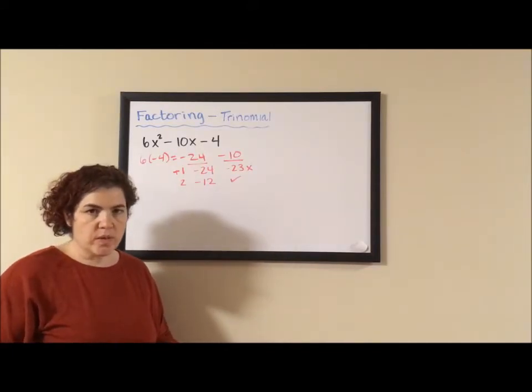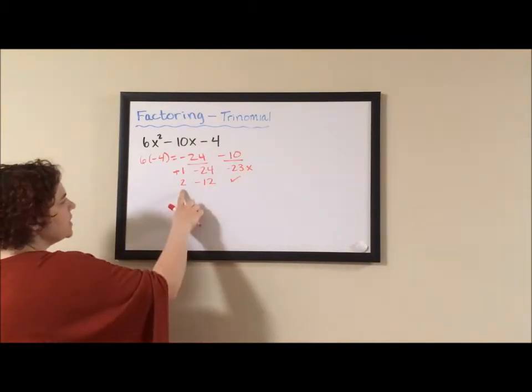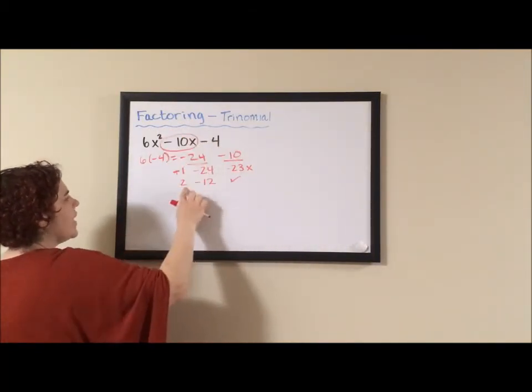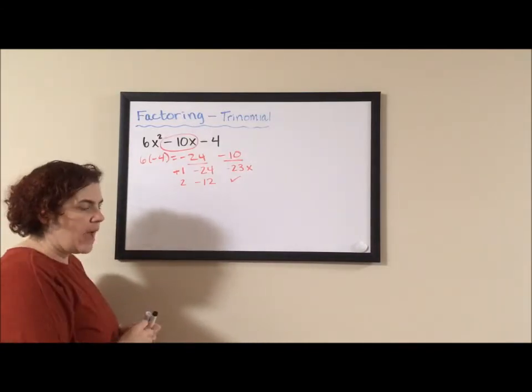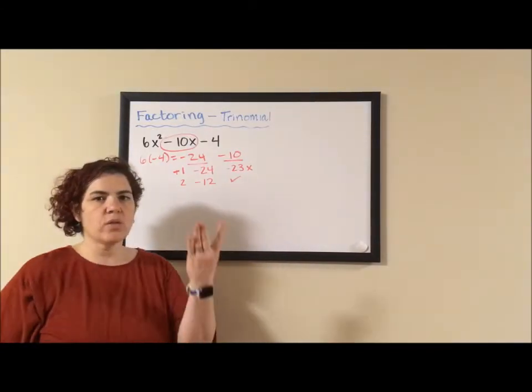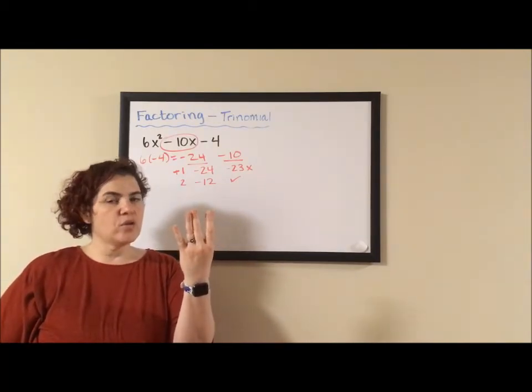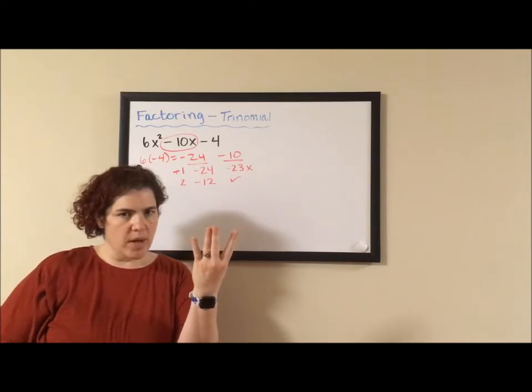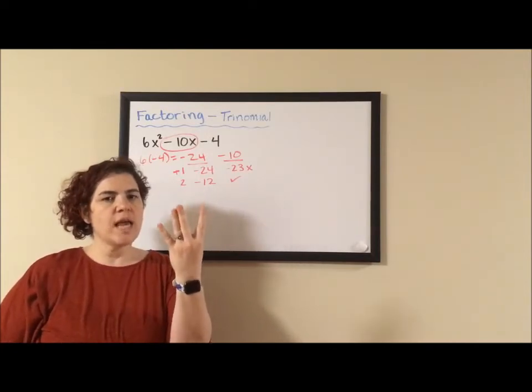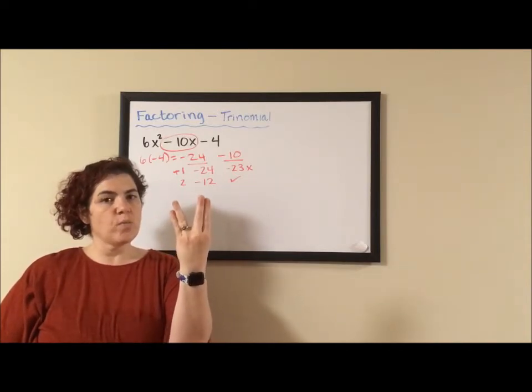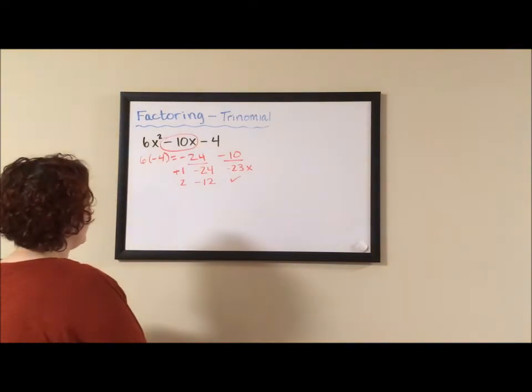And what we're doing when we do the AC process is we're replacing our middle term with the two factor pairs that got us there. We're trying to take our trinomial that looks like three terms, but when we got that trinomial it came by adding your two middle terms from multiplying a binomial times a binomial. So we need to take that trinomial, find the two terms that were used for that middle term and then we factor by grouping to get our final answer.